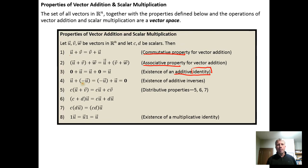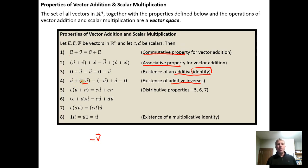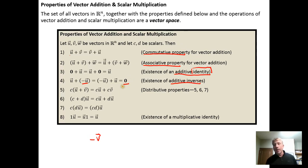Here we're talking about the negative vector — the opposite of a vector — and this identifies the existence of an additive inverse. If you have a vector U, then negative U (the opposite of U) is the vector you add to U so that when you sum the two vectors you get the zero vector. This is similar to how additive inverse is defined for real numbers.